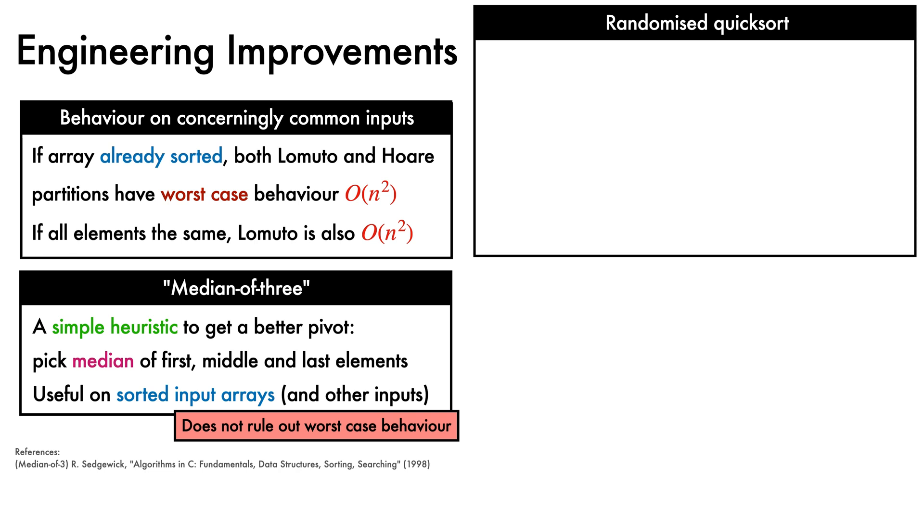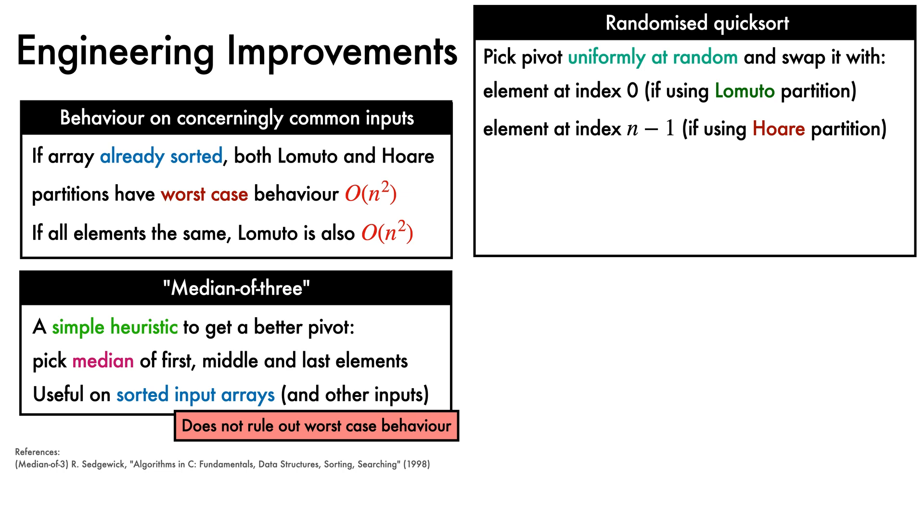It works through a simple modification to our existing quicksort. Each time we make a partition, we pick the pivot uniformly at random from the array elements, and swap it with the element at index 0 if we're using the Lomuto partition, or with the last element if we're using the Hoare partition described earlier. The expected runtime of randomised quicksort is big O of n log n.